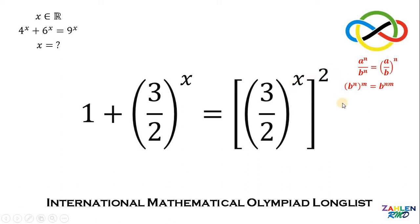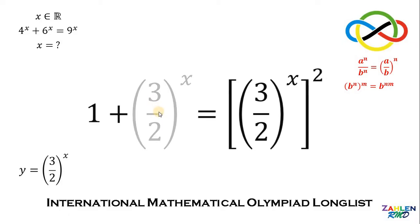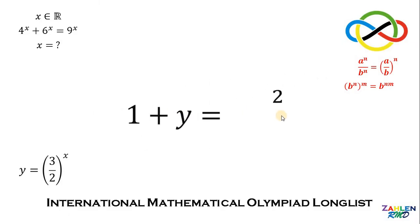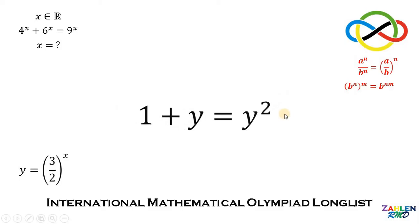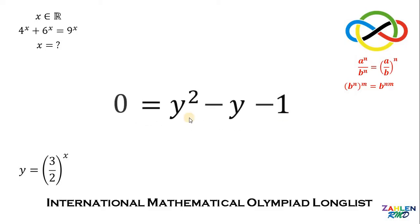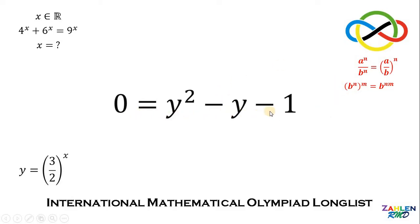To make it simple, let y be equal to 3 over 2 raised to the power of x. Therefore this term becomes y and the right-hand side becomes y squared. Now let's equate this equation to zero.